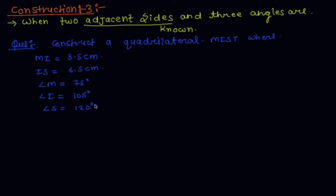Now let us draw this construction and construct this quadrilateral. The first step is to draw side MI, which is of length 3.5 cm.